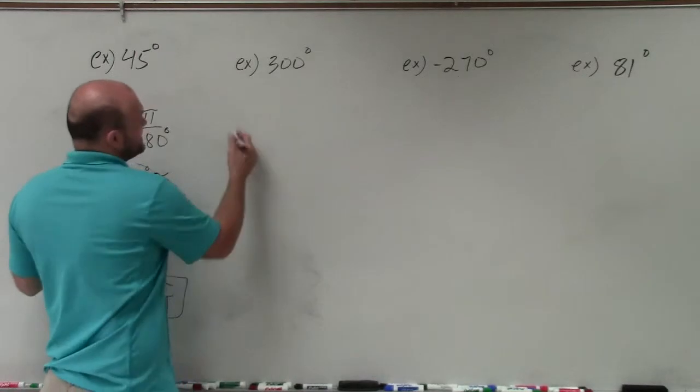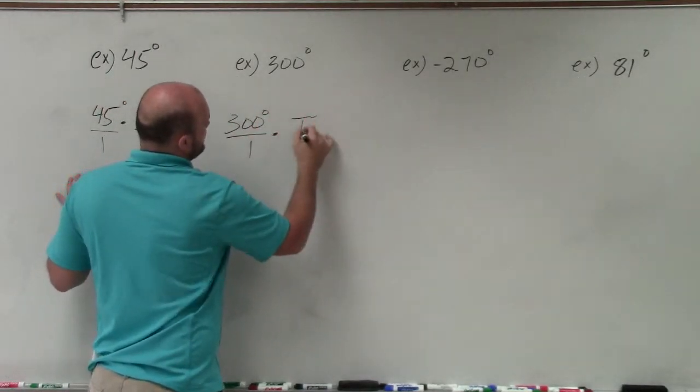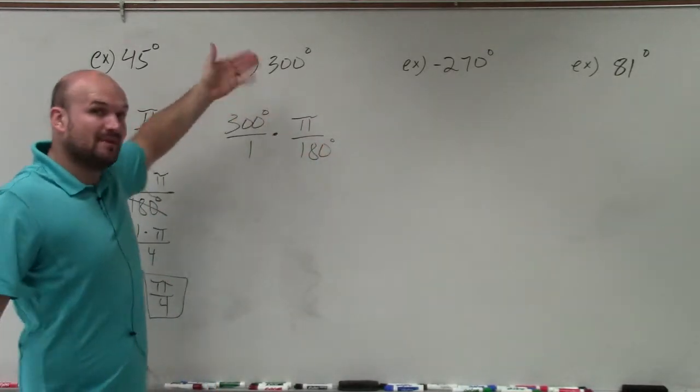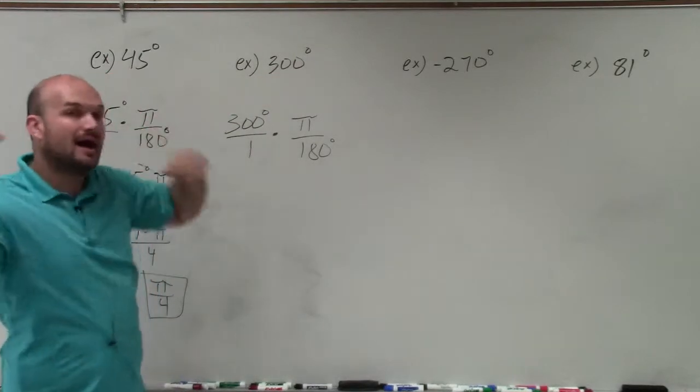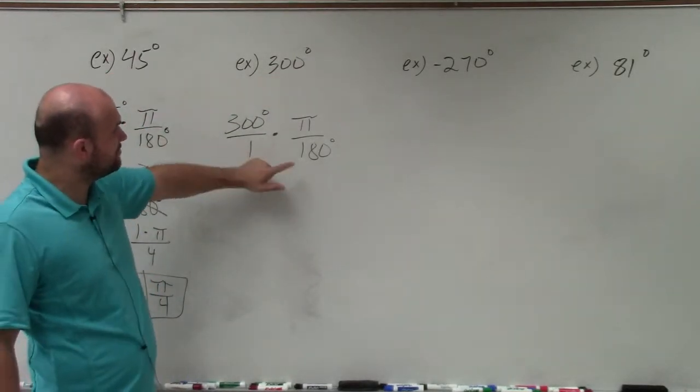So here, we'll have 300 degrees. Again, I'm just going to do the same thing. 300 degrees over one times pi over 180 degrees. Now, this time, my denominator is smaller than my numerator, but it still doesn't divide into it evenly. However, I can identify a number that divides into both of them.